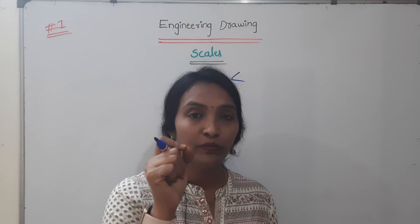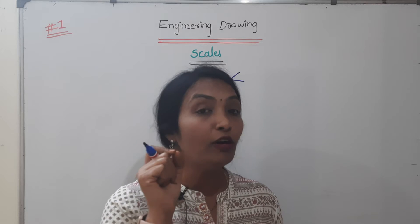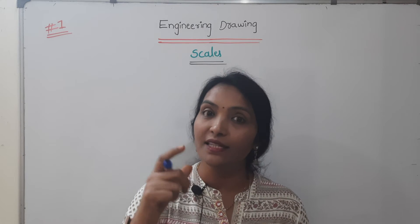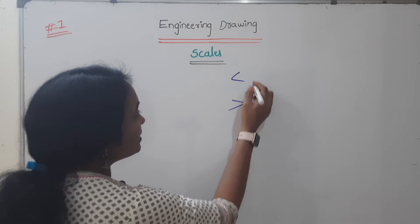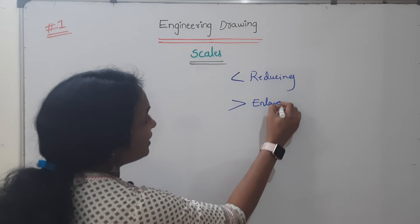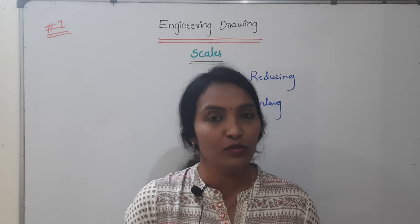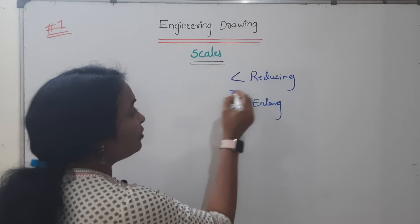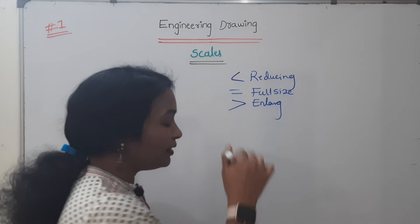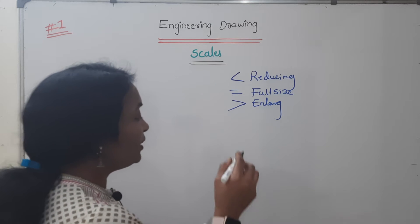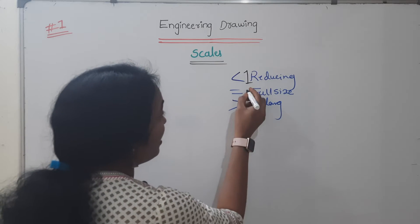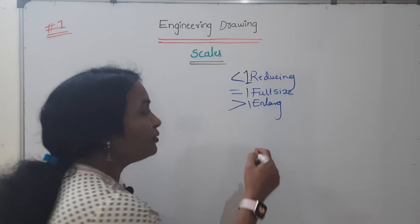If you have a small atom, you can enlarge it using the microscope. If you want to enlarge the scale, you can see the enlarging scale. If you want to reduce the scale, you can see the reducing scale. You can also see the criteria as it is — the full size scale. If you want to increase the scale, it is greater than 1. If you want to reduce the scale, the value is less than 1.